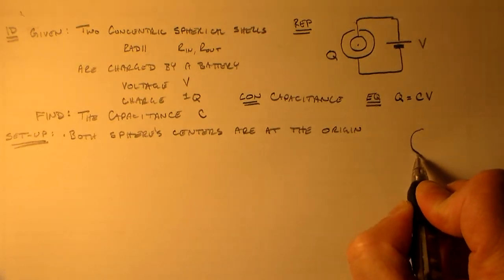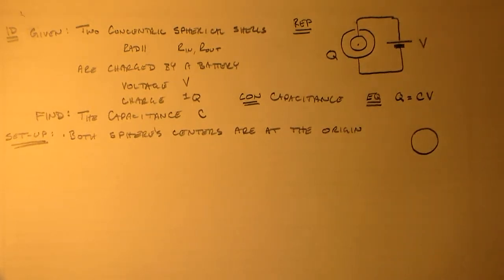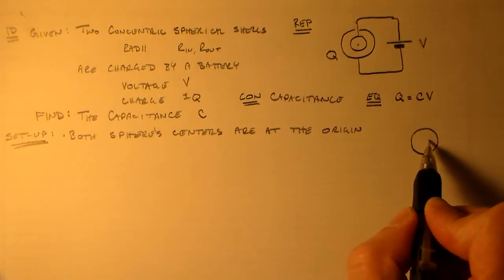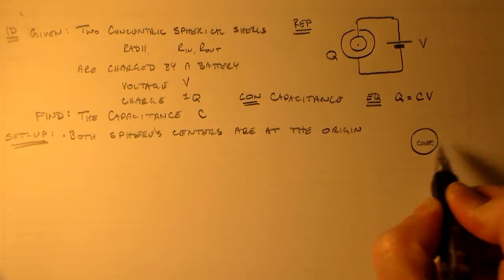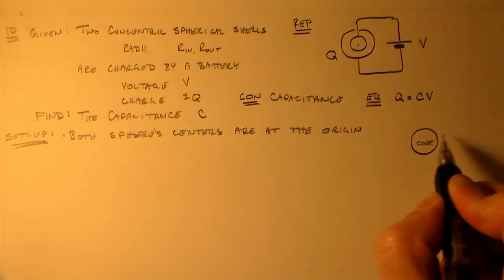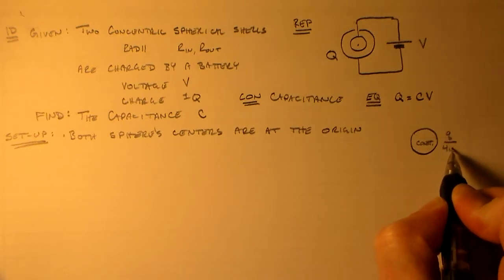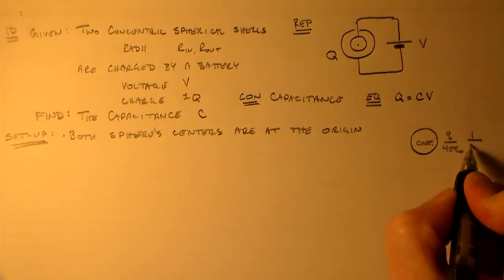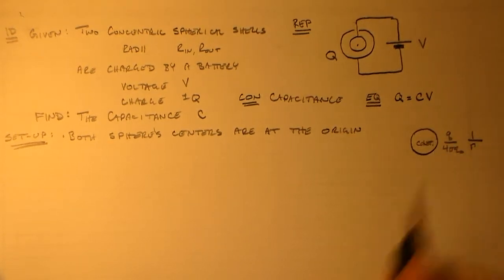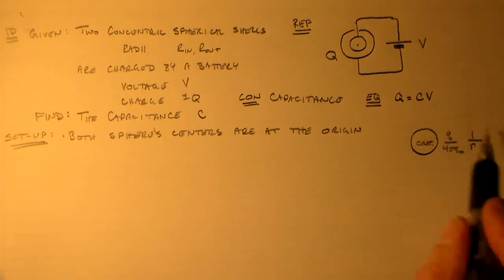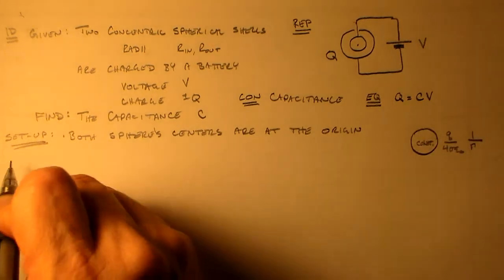So we're going to have to worry about what is the potential. This is, as far as I'm concerned, a solved problem for any of our systems. Inside, it's a constant. And outside, it's just like a point charge, right? So that's Q over 4 pi epsilon naught 1 over little r, right? The distance from the center. So this is enough to tell us everything we need to know about the potentials.